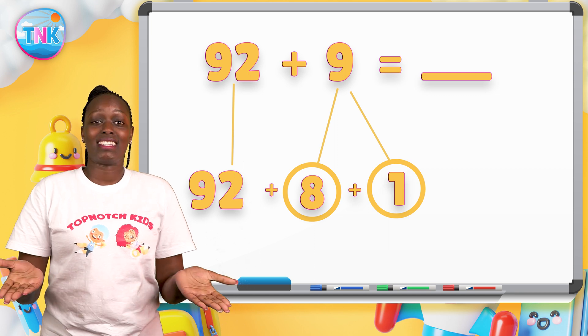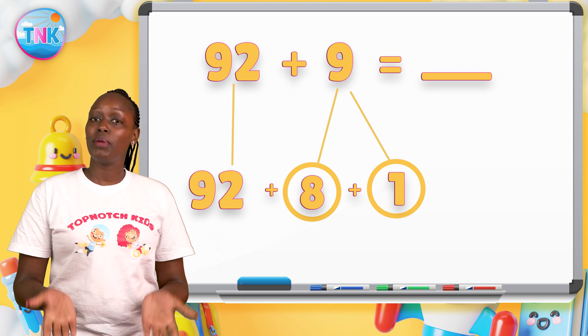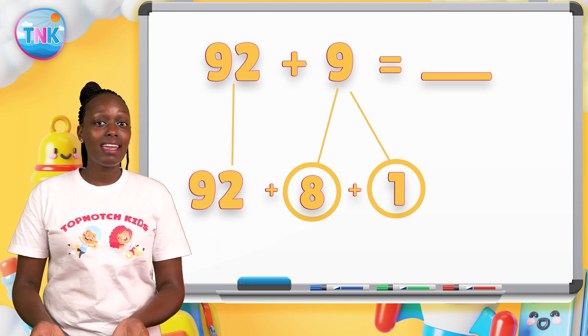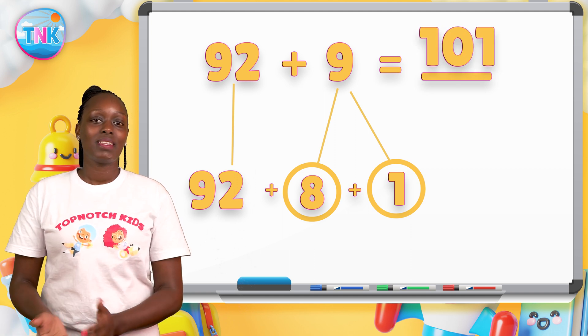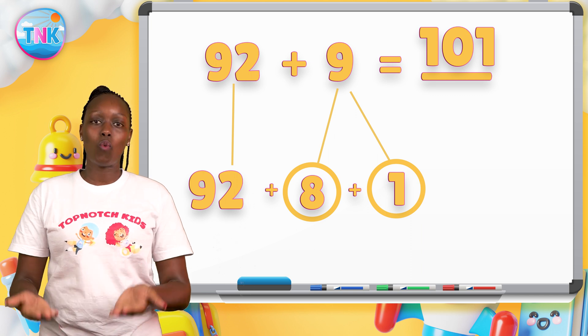Then count how many steps you need to make to get back to nine. Kudos! It's one step. The sum will be ninety-two plus eight plus one. The answer is one hundred one.